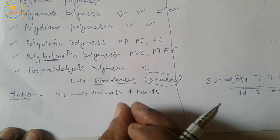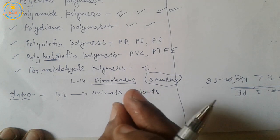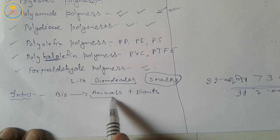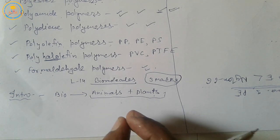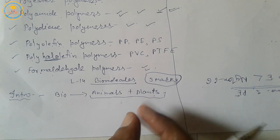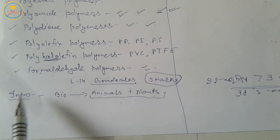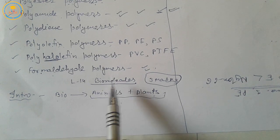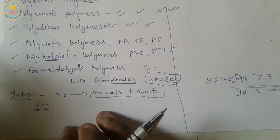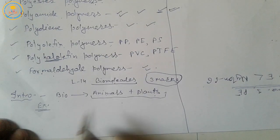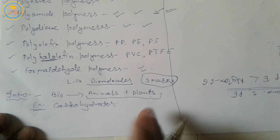The complex organic compounds which build up living organisms — meaning animals and plants — and are required for their growth and maintenance are called biomolecules. These form the basis of life. Examples include carbohydrates and proteins.